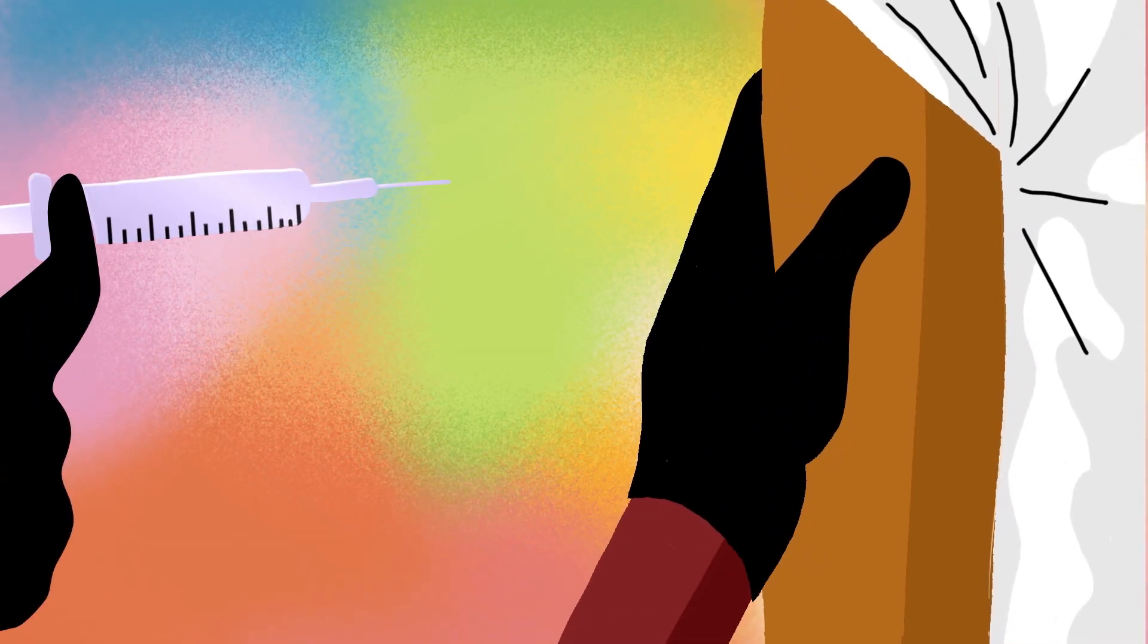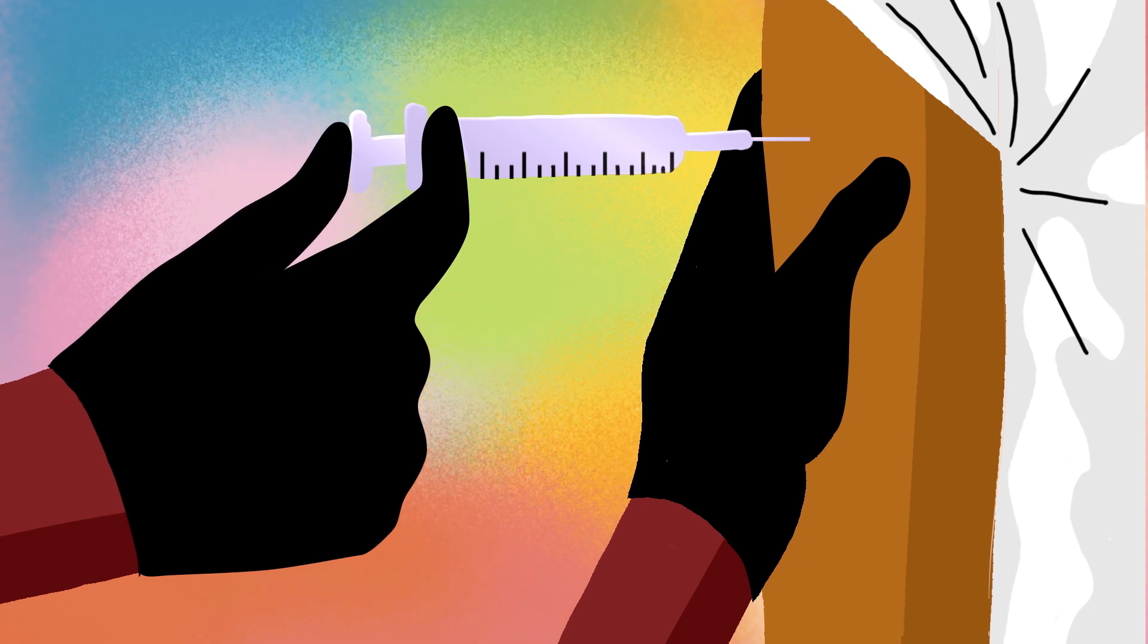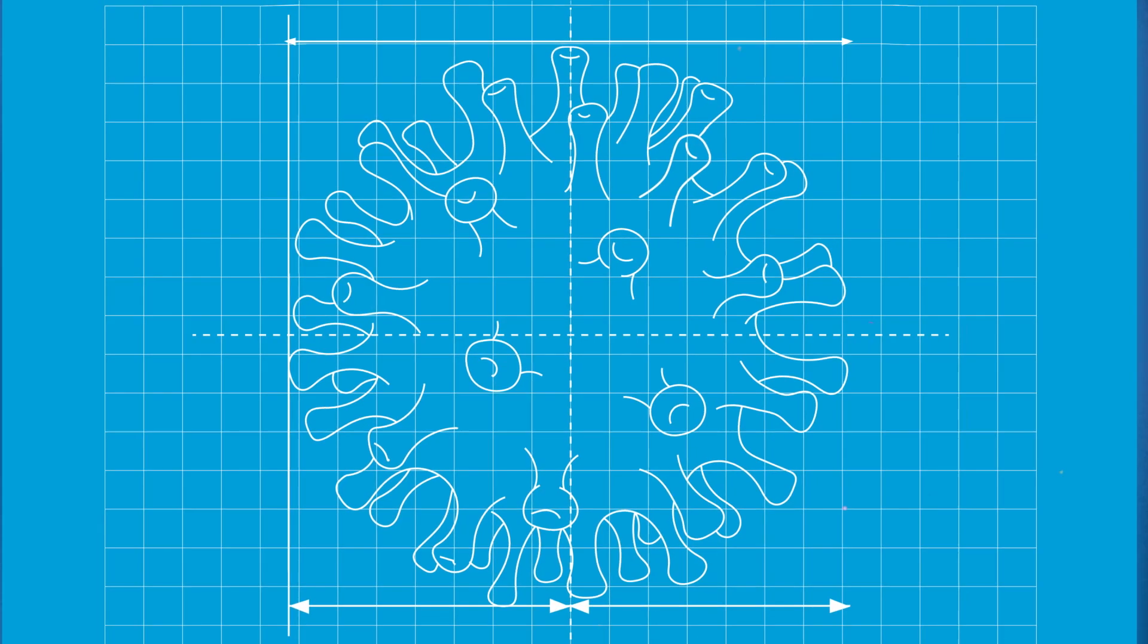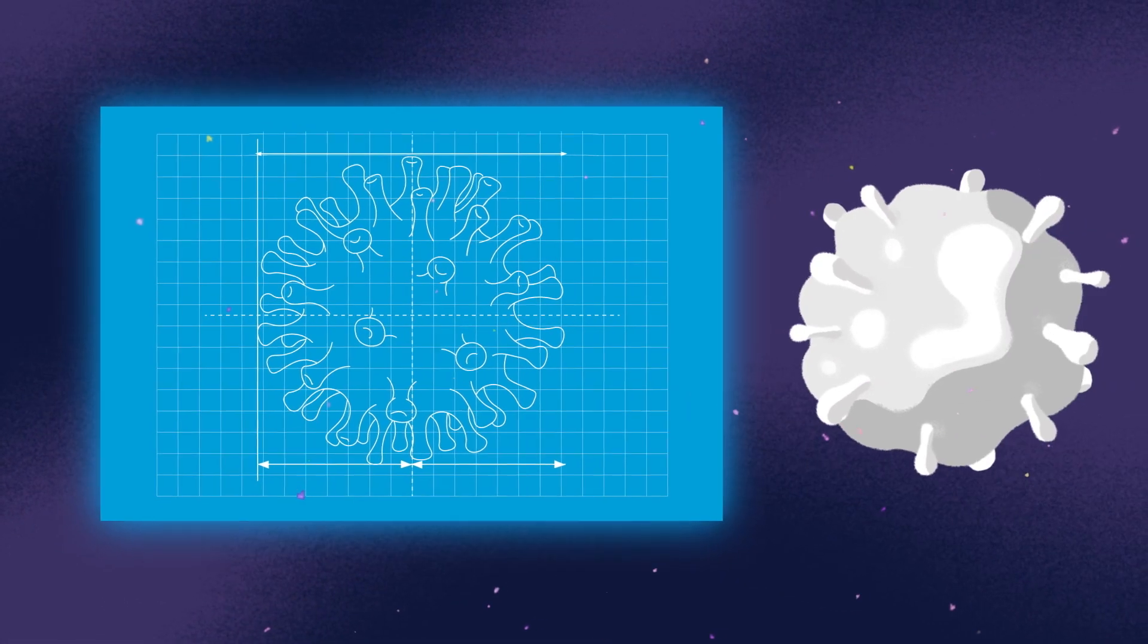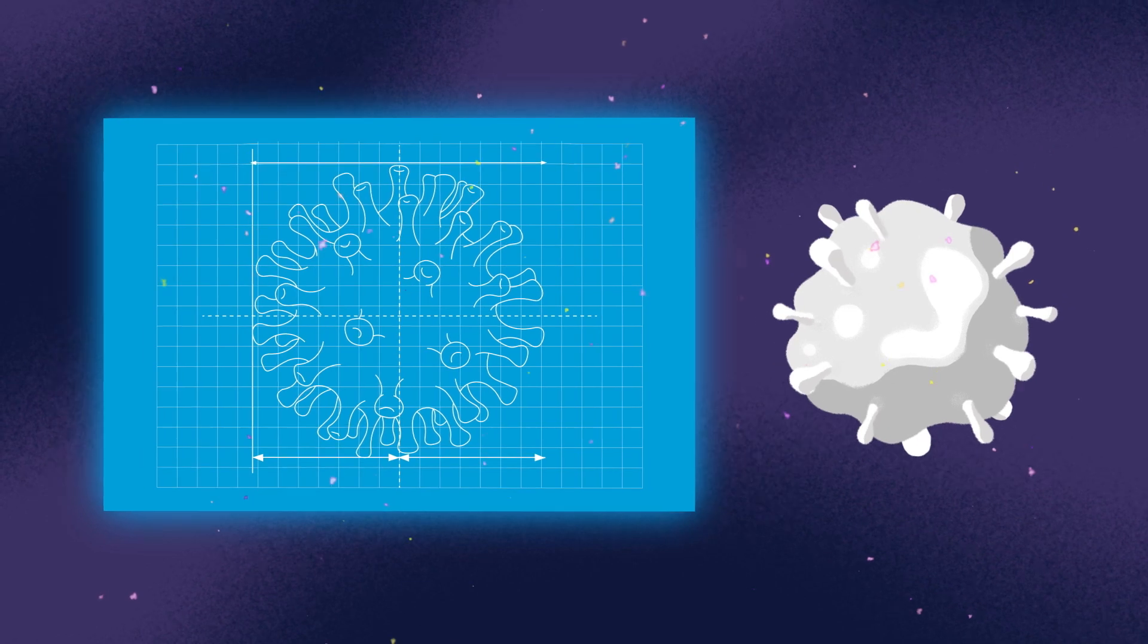All of the vaccines being given today give your cells this instruction manual, teaching them how to stop COVID-19. The difference between the vaccines is how they deliver these instructions to your cells.